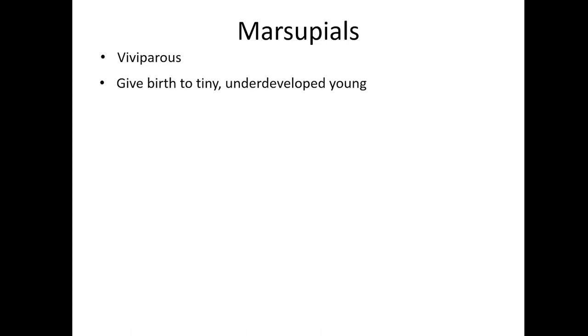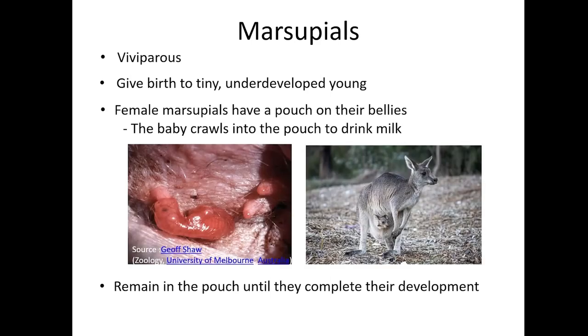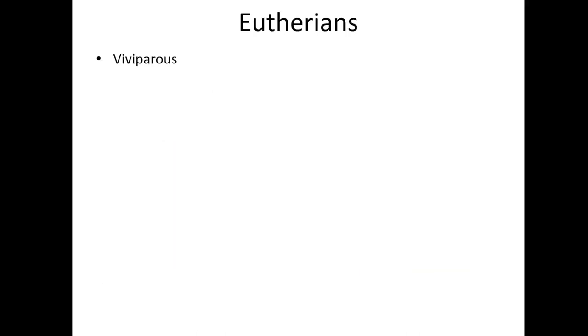Marsupial mammals are viviparous and give birth to tiny, underdeveloped young. Female marsupials have a pouch on their bellies which they can open and close using a special muscle. Without any parental help, the immature babies crawl into the pouch where they nurse on their mother's milk and remain until they complete their development. The most common marsupials are kangaroos and koalas.